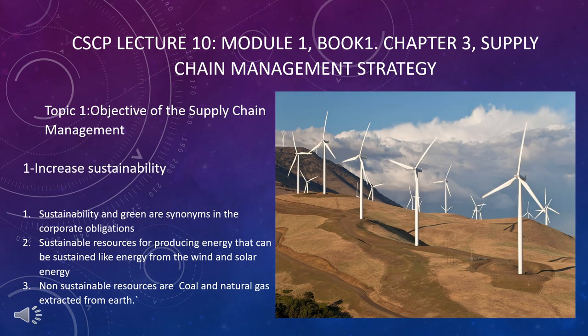The first objective is increase sustainability. Sustainability and green are synonyms, and this concept is very important in supply chain, especially in developed countries. The concept is about shifting to resources for our next generation — sustainable resources for producing energy that can be sustained, like energy from wind and solar, which are resources that will last indefinitely.